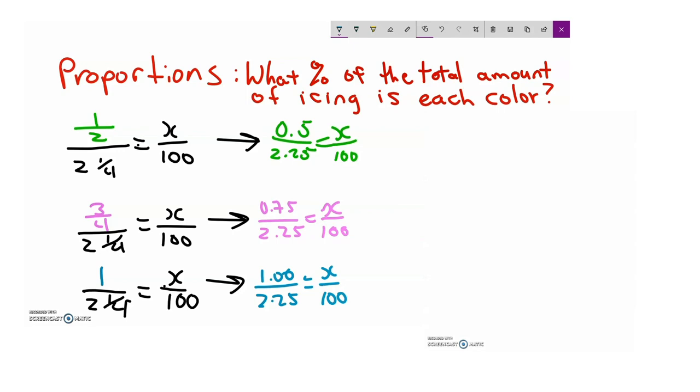All that's left to do now is cross multiply and solve for x. So for the green frosting, we know that 0.5 times 100 is equal to 2.25 times x. So moving the decimal place over twice, because when you multiply by 100, you are moving the decimal place over two times to the right. So 50 is equal to 2.25 times x. Divide both sides by 2.25 to get the percent of frosting that is green. So 22 over 100 is equal to 22%. So x is equal to 22.